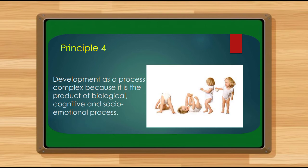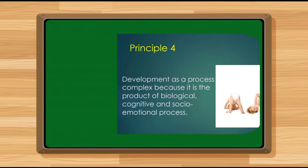For example, if Kian and Brian were undernourished and troubled by the thought of their parents about to separate, they could not concentrate on their studies and consequently would fail and repeat. As a consequence of not being able to concentrate, they may also lose face and drop out of school, leading to illiteracy, becoming unskilled, unemployed, and so on. Can you see how the biological process affects the cognitive process, which in turn affects the socio-emotional process of that child?